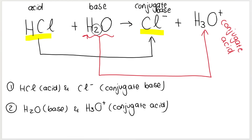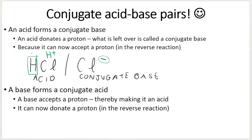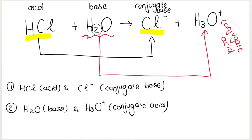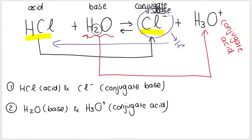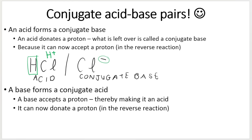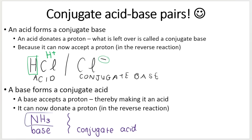You also use arrows like that in the example. Here's a nice summary: when the acid donates its proton, what's left over is called a conjugate base. The reason it's called a conjugate base is because if we reverse the reaction, Cl minus now has the ability to accept a hydrogen, making it a base — because bases are hydrogen acceptors. So a base forms a conjugate acid. For example, ammonia, NH3, is a base. Bases are proton acceptors, so if ammonia accepts a proton, what does it become? It will become NH4 plus — so that is the conjugate acid.